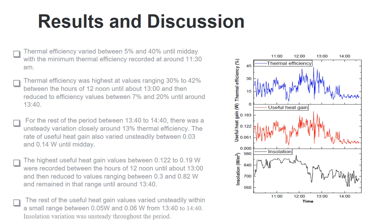The rate of useful heat gain also varied unsteadily between 0.030 to 0.14W until midday. The minimum rate of useful gain was observed about 11:30, which is similar to the minimum of thermal efficiency as was said earlier.